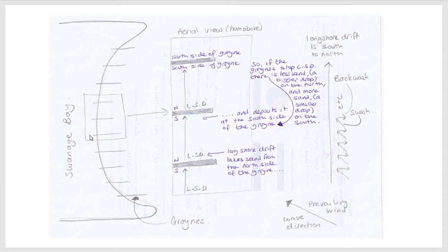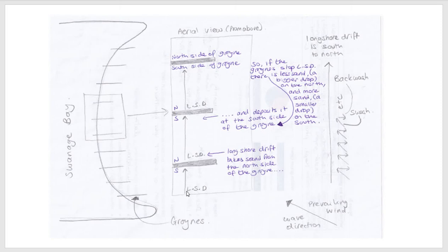What I've tried to do next on this diagram is do a zoomed-in bit of these three groins to show you exactly what is happening. So here are the groins, and here comes the first confusing bit with regards to the north side and the south side of the groin. Here's the south side and here's the north side. The south side of the groin is facing south and the north side is facing north. What we've got happening is the sand being moved up the beach — it's being moved by the waves, then it hits the groin, can't go any further, so it gets deposited.